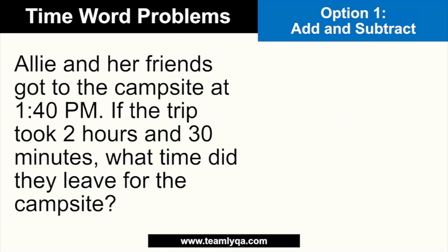Now let's take this question. Ali and her friends got to the campsite at 1:40 PM. If the trip took 2 hours and 30 minutes, what time did they leave for the campsite? Now obviously, this is a subtraction problem. If you can't figure it out right away, try translating the problem — that's always my advice when you're having trouble with word problems. In Tagalog: they arrived at the campsite at 1:40 PM, the trip was 2 hours and 30 minutes, so what time did they leave?